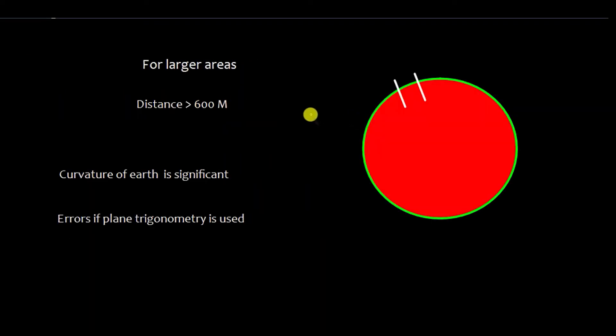If you are looking for a smaller area, less than 600 miles, the Earth can be considered as plain. However, if there is larger area and the distance is greater than 600 miles, we cannot ignore the curvature.